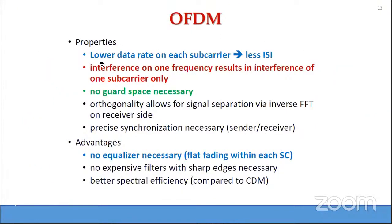OFDMA has interesting properties: we divide the entire bandwidth into multiple sub-carriers, and each sub-carrier uses a lower data rate. Therefore, inter-symbol interference is reduced. Interference on one frequency results in interference of only one sub-carrier, and there is no need for any guard space because of orthogonality.